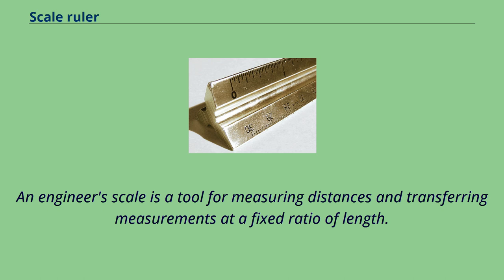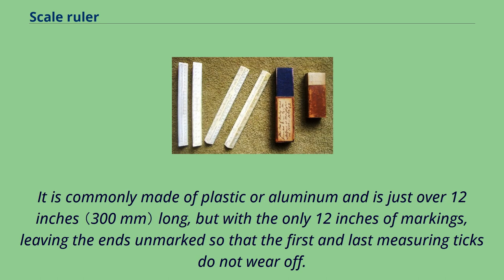An engineer's scale is a tool for measuring distances and transferring measurements at a fixed ratio of length. It is commonly made of plastic or aluminum and is just over 12 inches long, but with only 12 inches of markings, leaving the ends unmarked so that the first and last measuring ticks do not wear off.